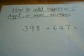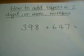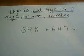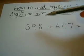How to add together two-digit or more numbers. I'm going to add together 398 and 647. First thing, it is no good having it laid out like this. We need it laid out vertically.